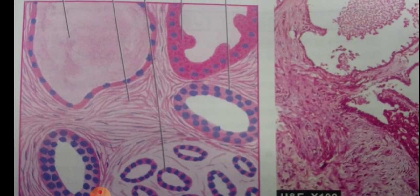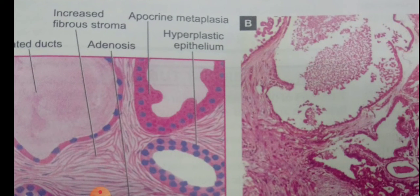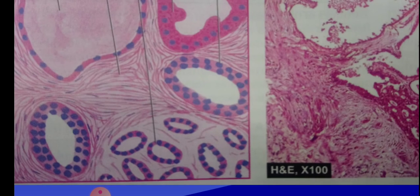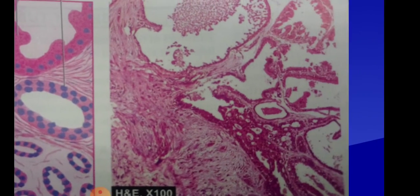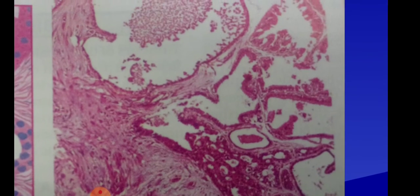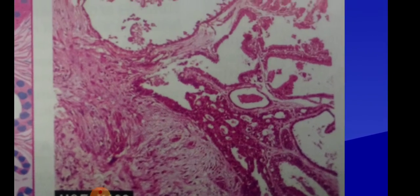Also seen is adenosis — proliferation of the mammary glands. Epithelial hyperplasia is defined as ductal lining more than two layers. Apocrine metaplasia shows multiple cells with abundant pink cytoplasm and benign-appearing nuclei. The ducts are lined by a double layer of myoepithelial cells and epithelial cell lining. The combination of dilated cysts, apocrine metaplasia, adenosis, and surrounding fibrous tissue is the typical picture of fibrocystic changes.